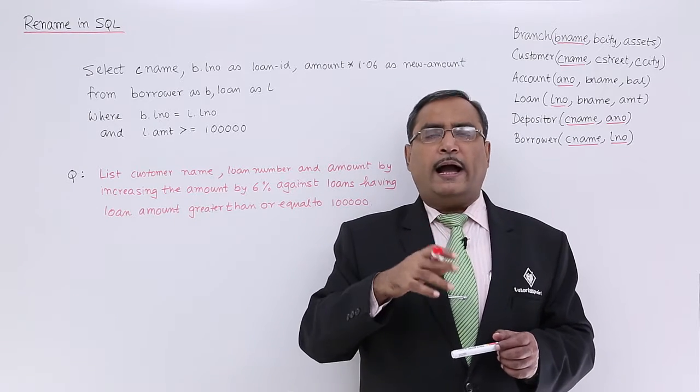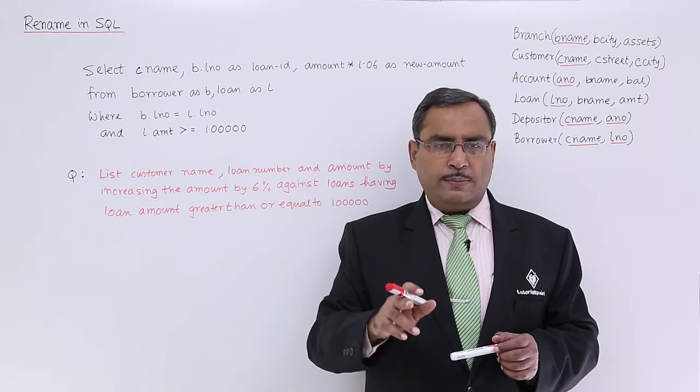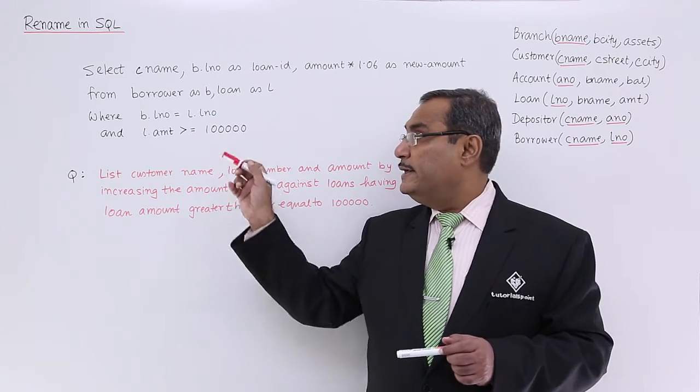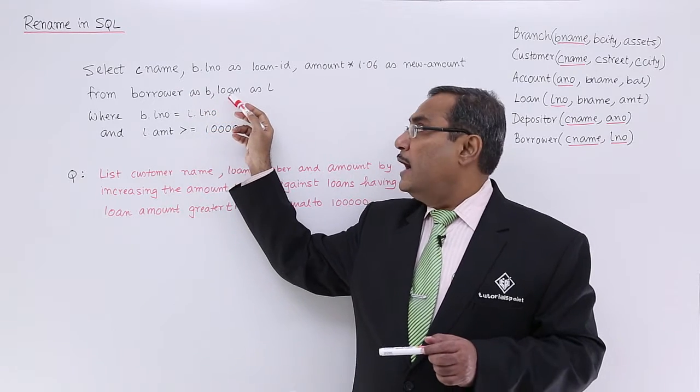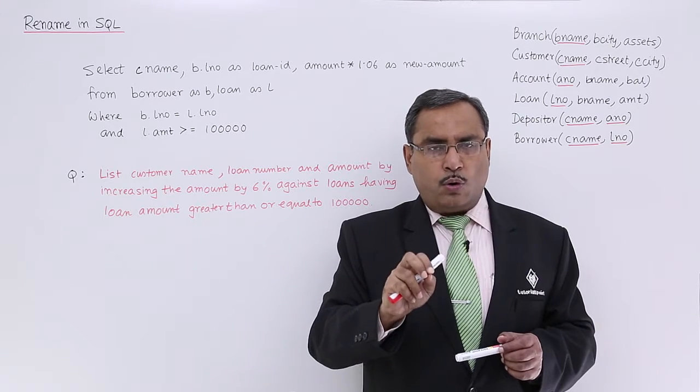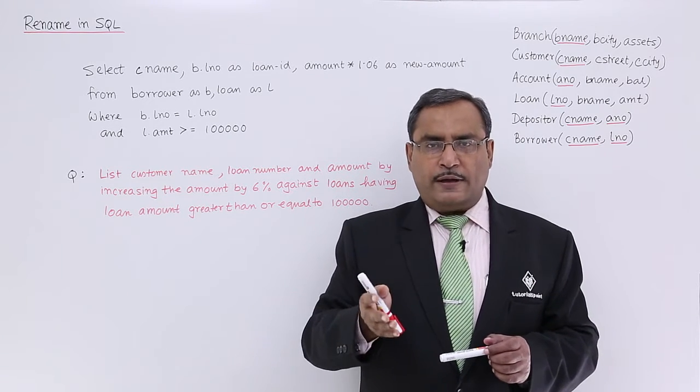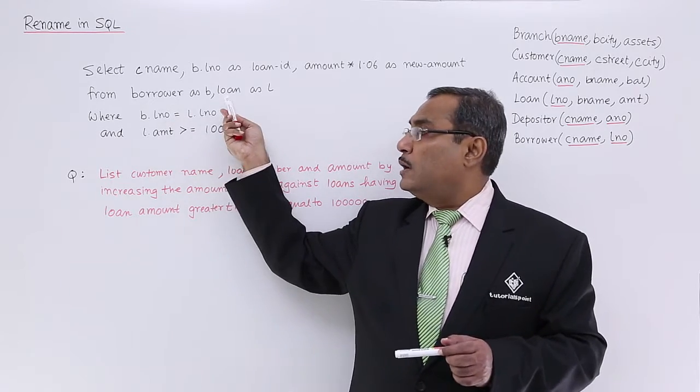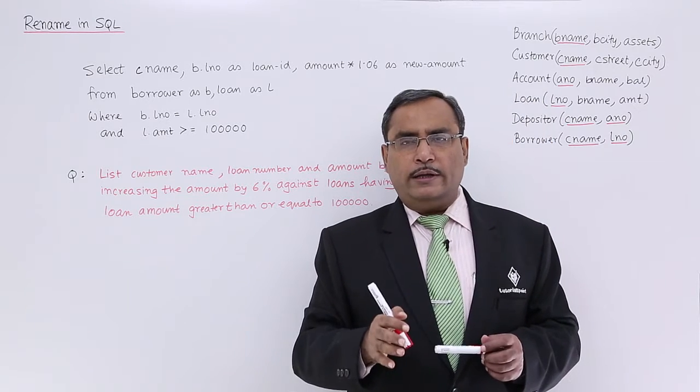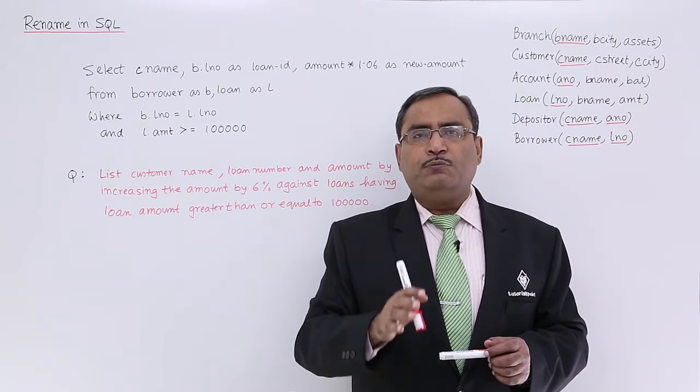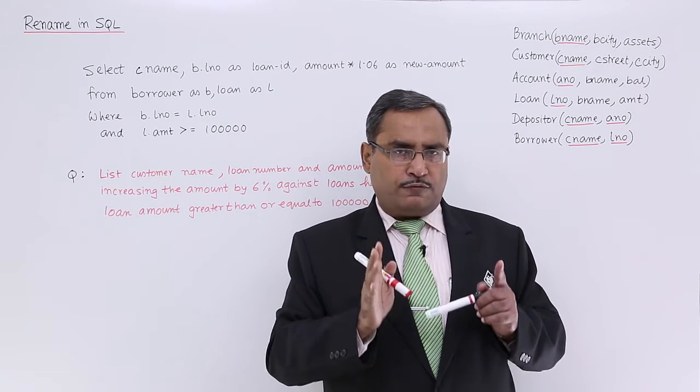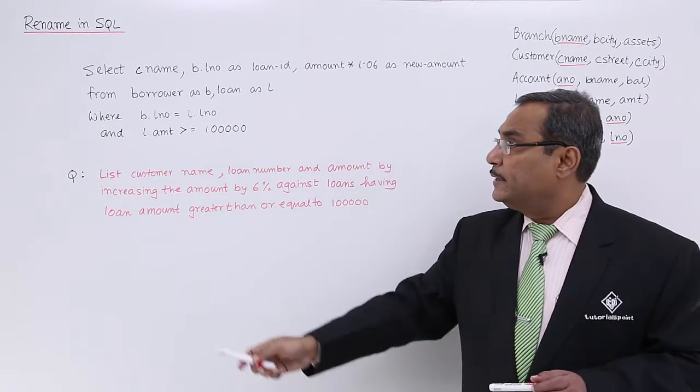That is why throughout the query, I can use A. Always remember this rename operation will rename the particular table to a certain name. Here borrower has been renamed as B and loan has been renamed as L. This renamed name is having a scope within the query only. Next time if I want to issue any other query on this borrower and loan, I should not call it by B or L respectively, I should be calling it and accessing it as borrower and loan only. This renaming is confined, the scope is confined within the query only.